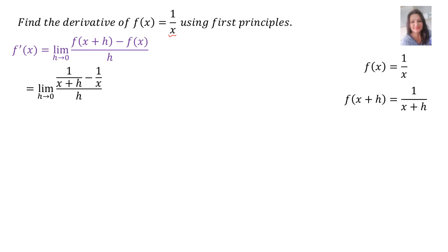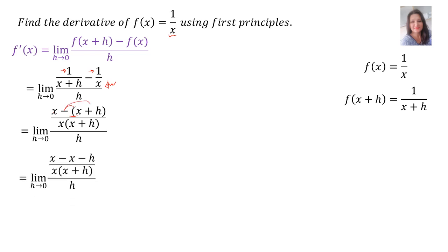In the next step, you want to add those two fractions, so you need to find the LCD. The LCD is x times bracket x plus h. The first term you multiply by x, and the second term you multiply by x plus h — but remember there's a minus, so you have to add a bracket. In the next step, I multiply in the minus, and I'm left with the limit h tends to 0 of x minus x minus h, over the LCD x times (x plus h), everything over h.